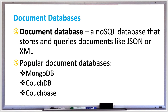A document database is a type of NoSQL database that stores and queries document data such as JSON or XML. Document databases make it easy for developers to store and query data in the database by using the same document model format that they use in their application code.